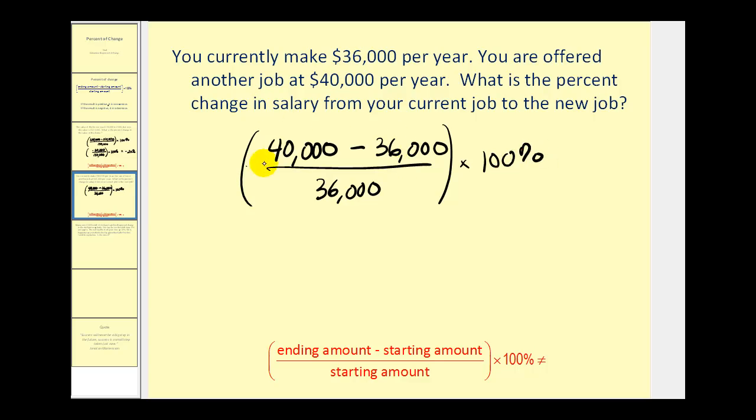Again, this will give us a decimal, and this converts it to a percentage. $40,000 minus $36,000 would be $4,000 divided by $36,000 times 100 percent.